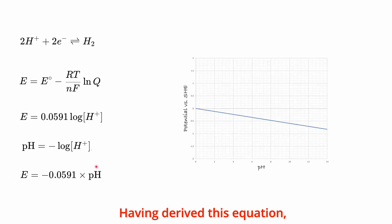Having derived this equation, it can be plotted on a potential versus pH graph. This equation generates the line corresponding to this specific electrochemical equilibrium. For conditions above this line, the oxidation reaction is favored. Conversely, for conditions below this line, the reduction reaction is favored.